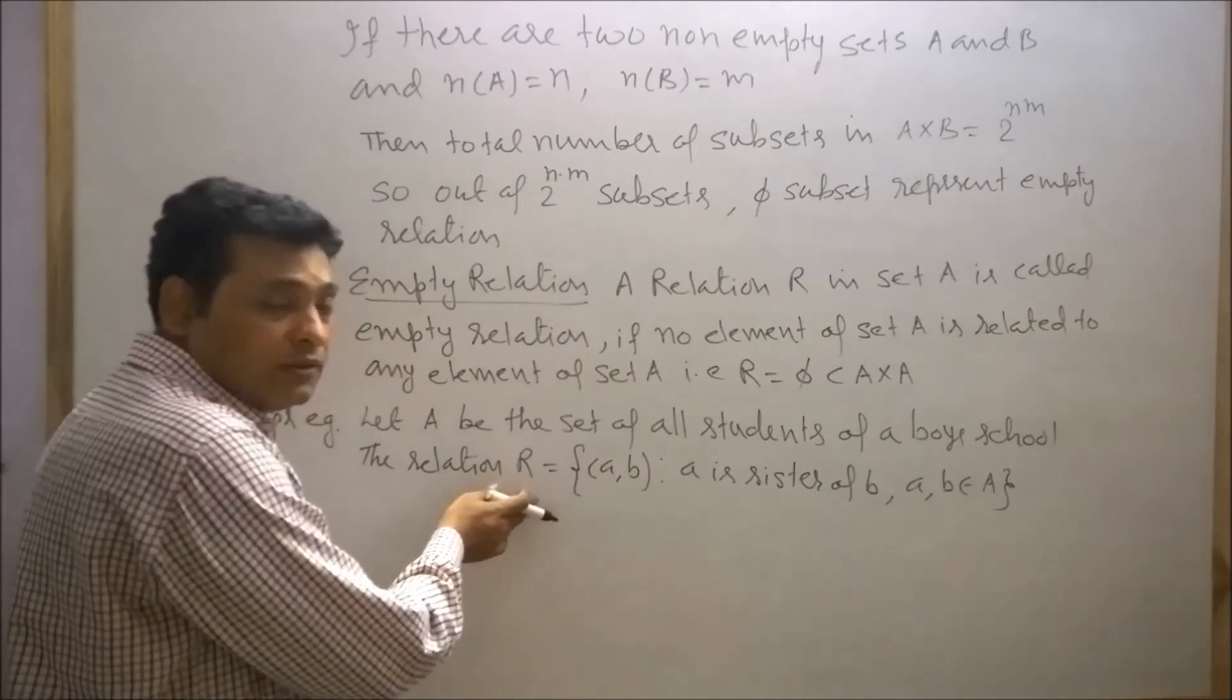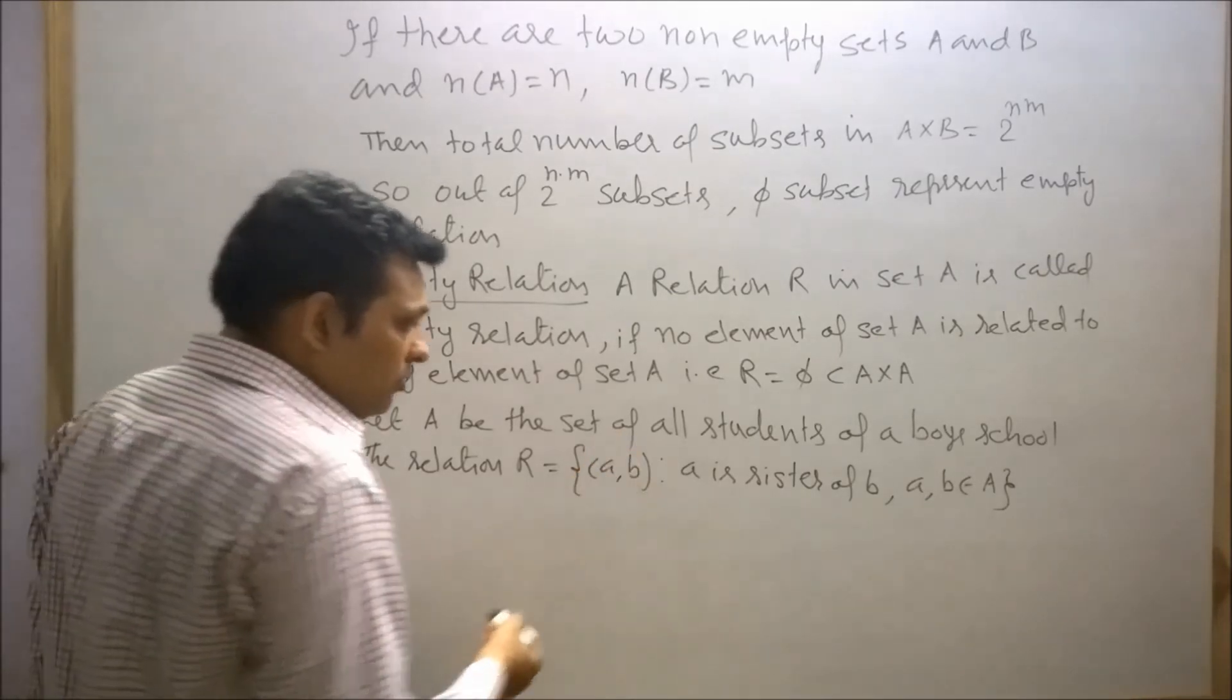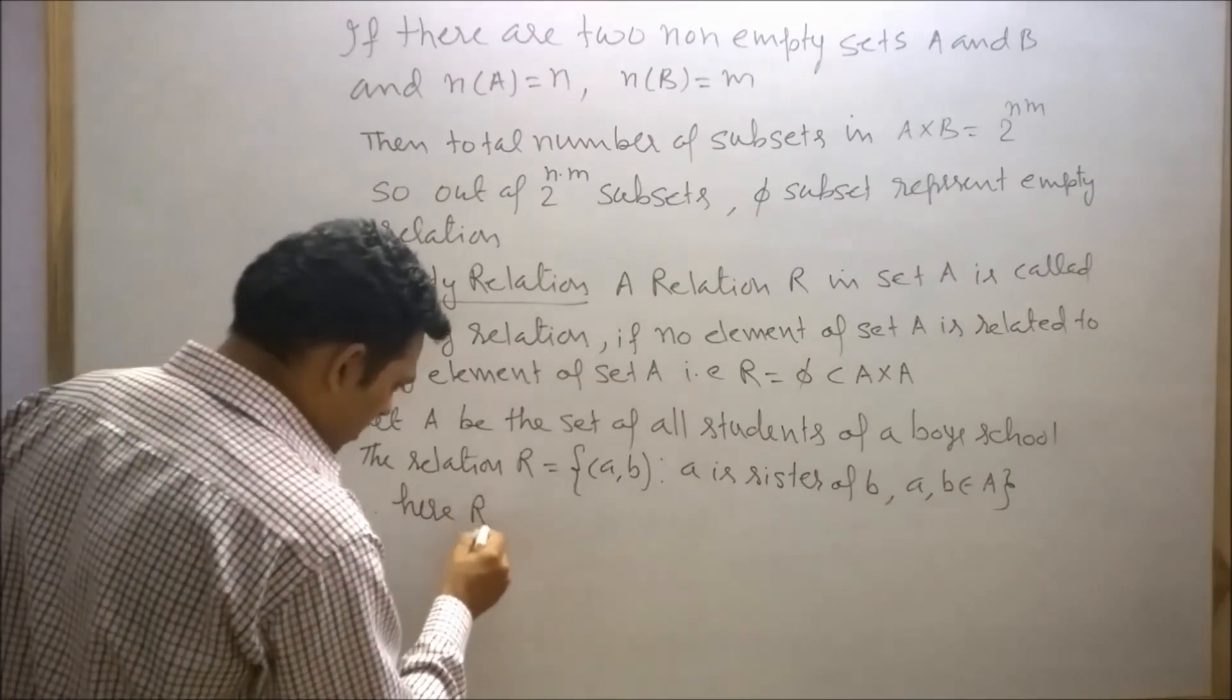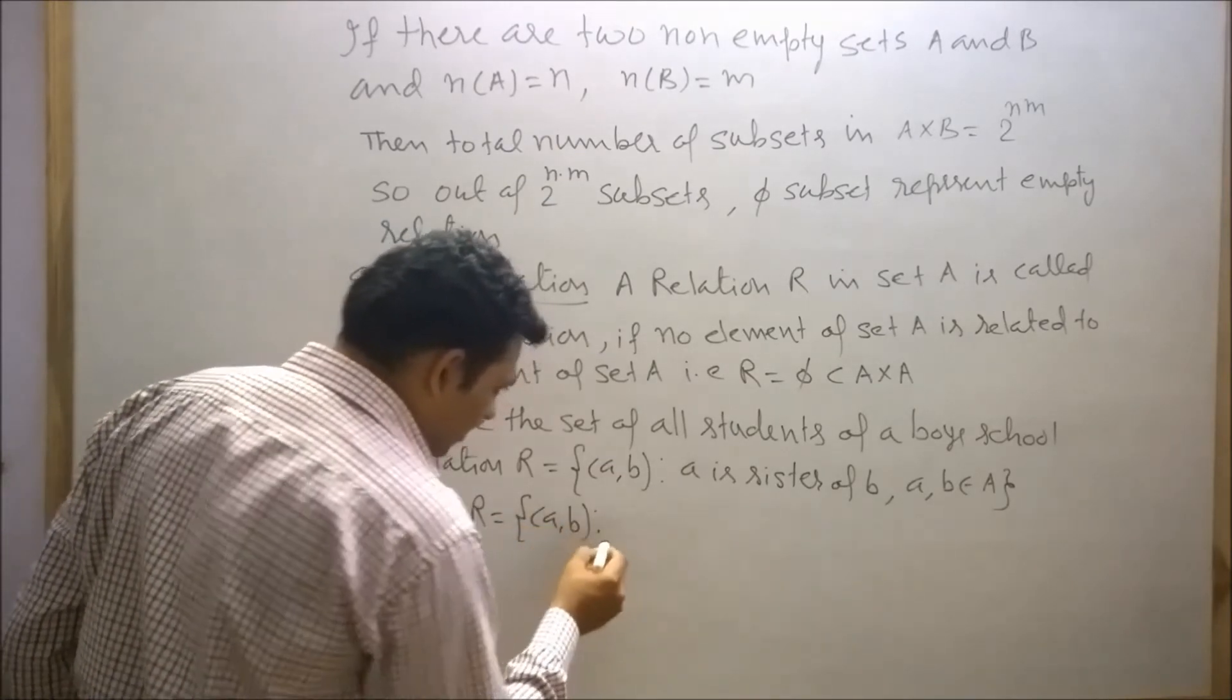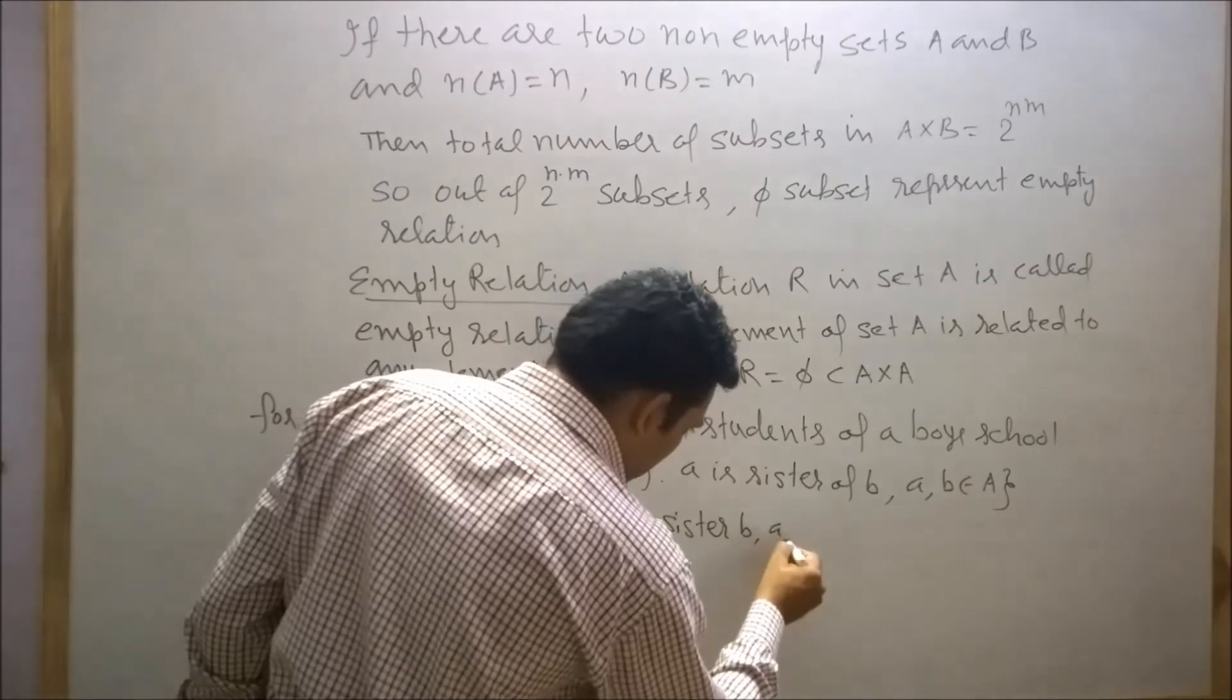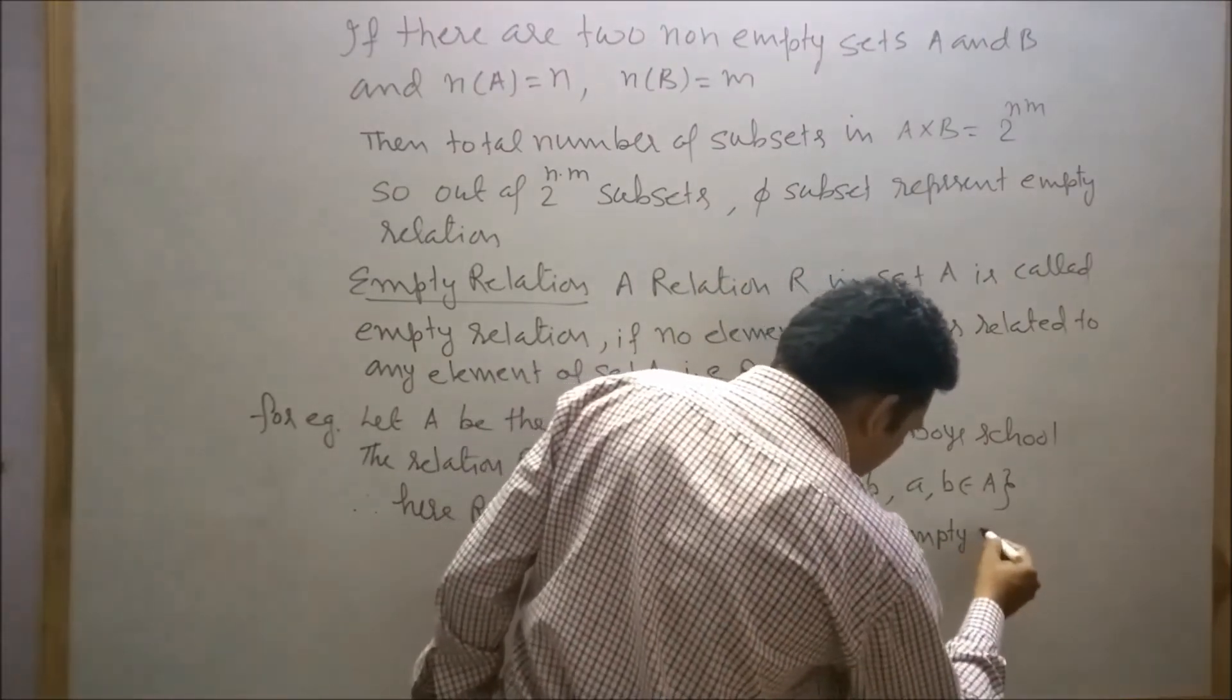This relation is empty relation, since there is no student who will be the sister of any student in the boys school. So here R equals (a, b) such that a is sister of b, where a and b belong to set A, is an empty relation.